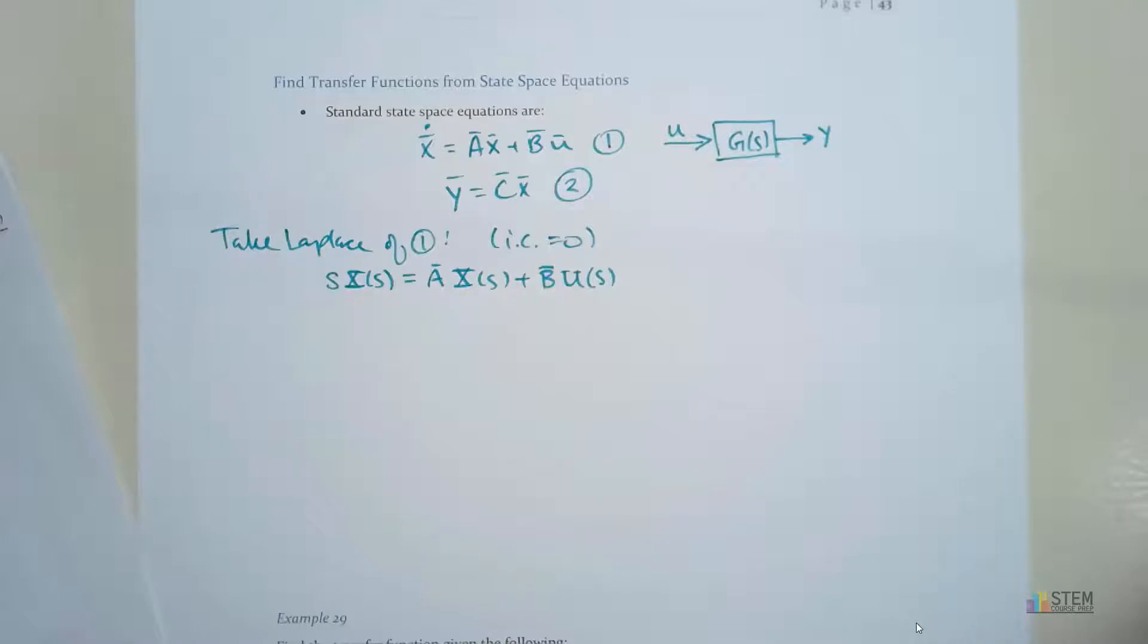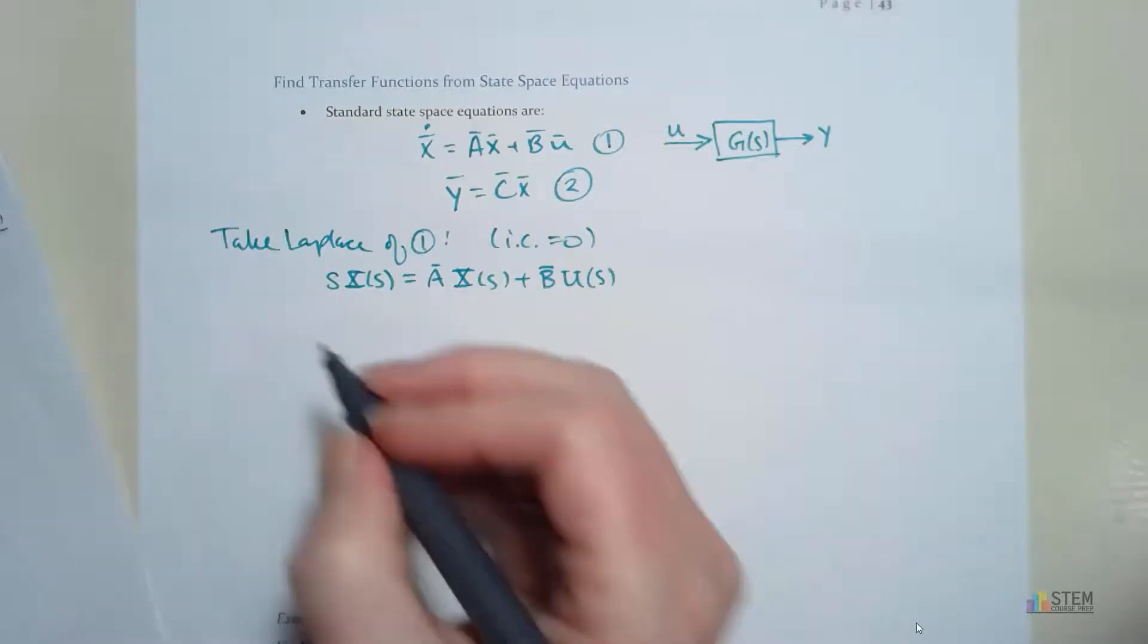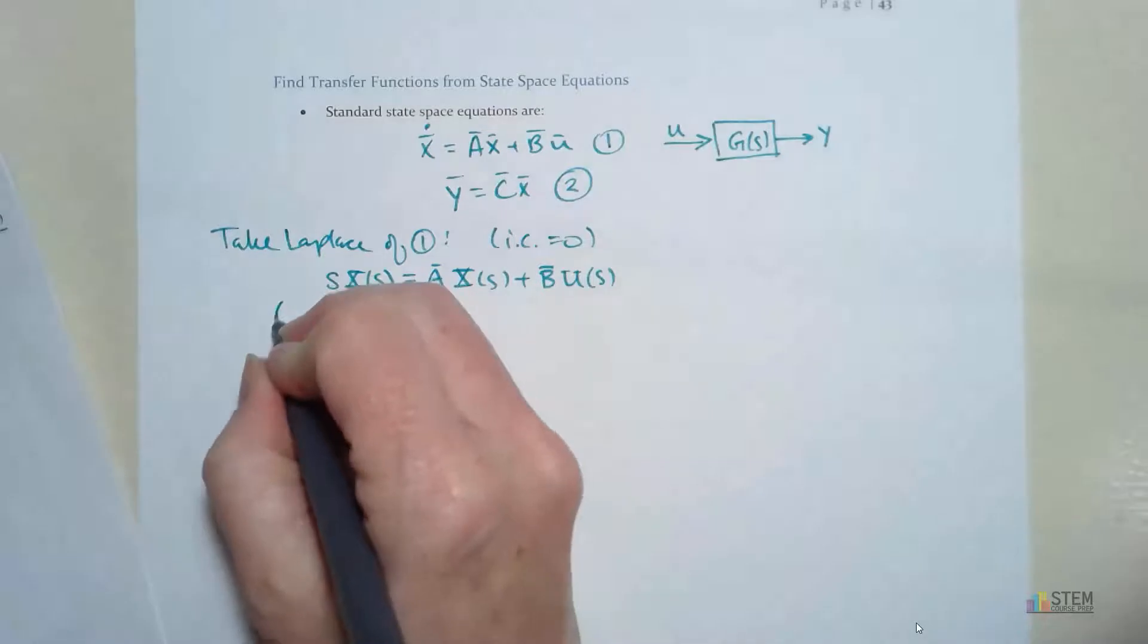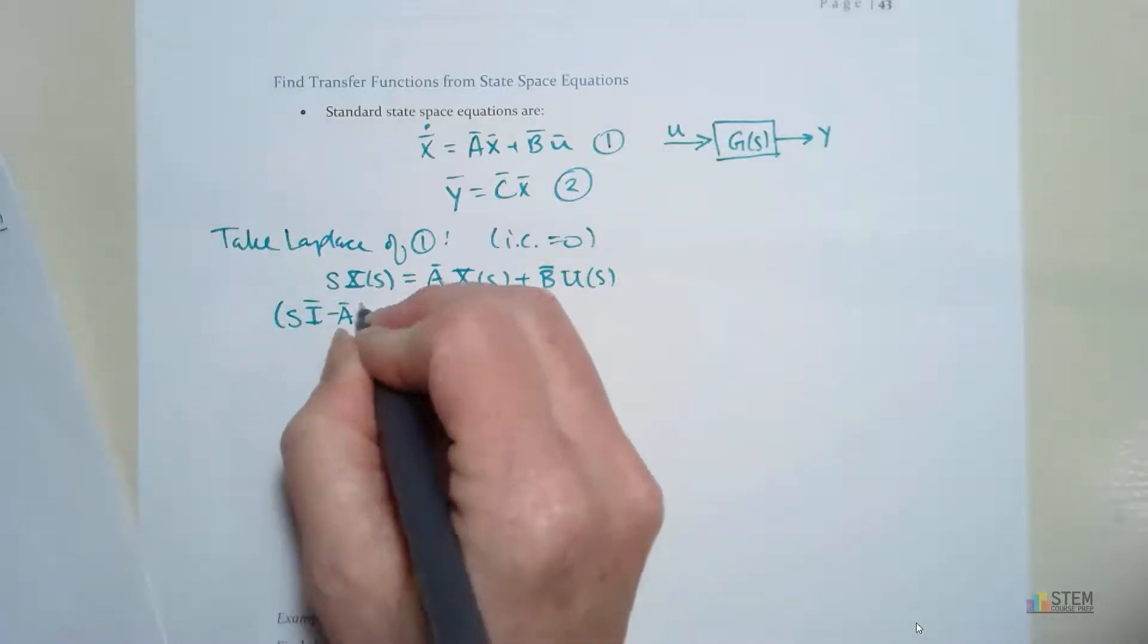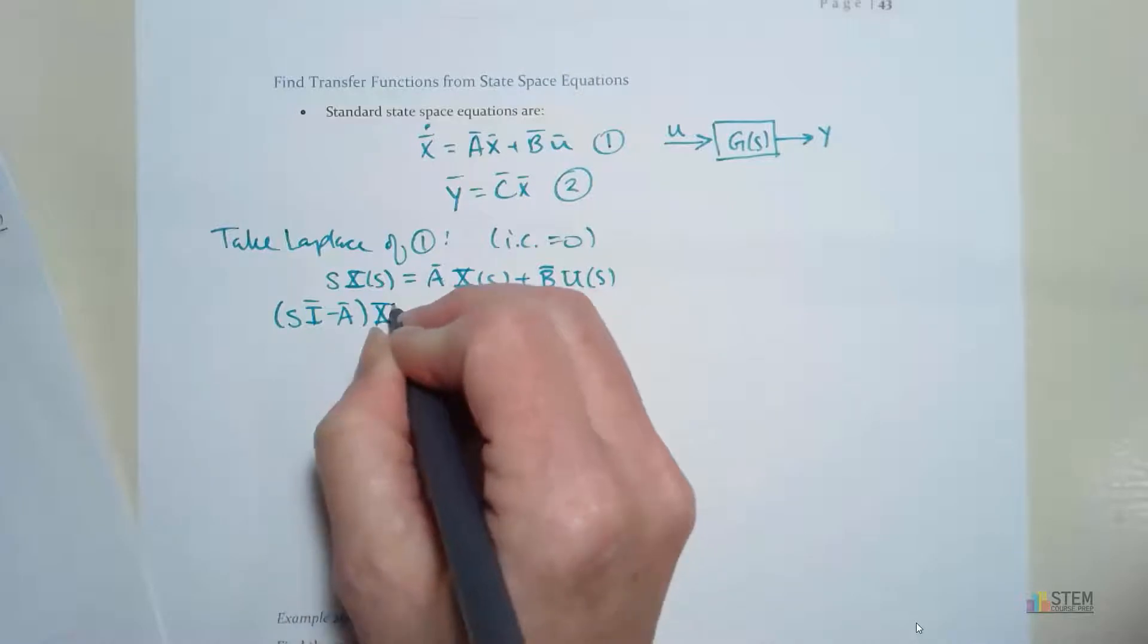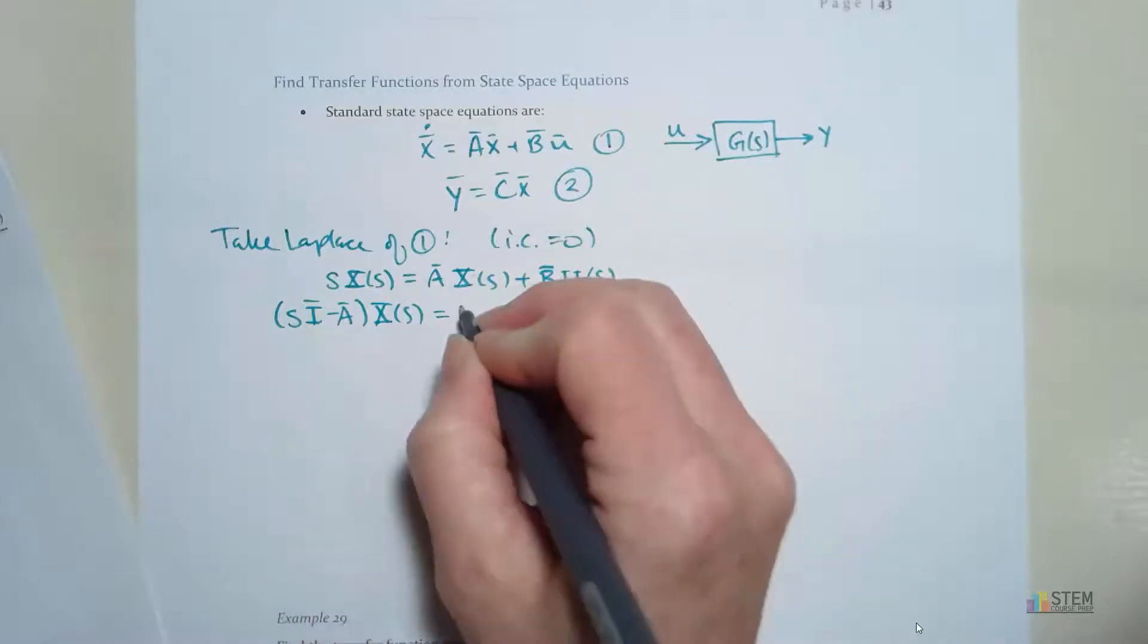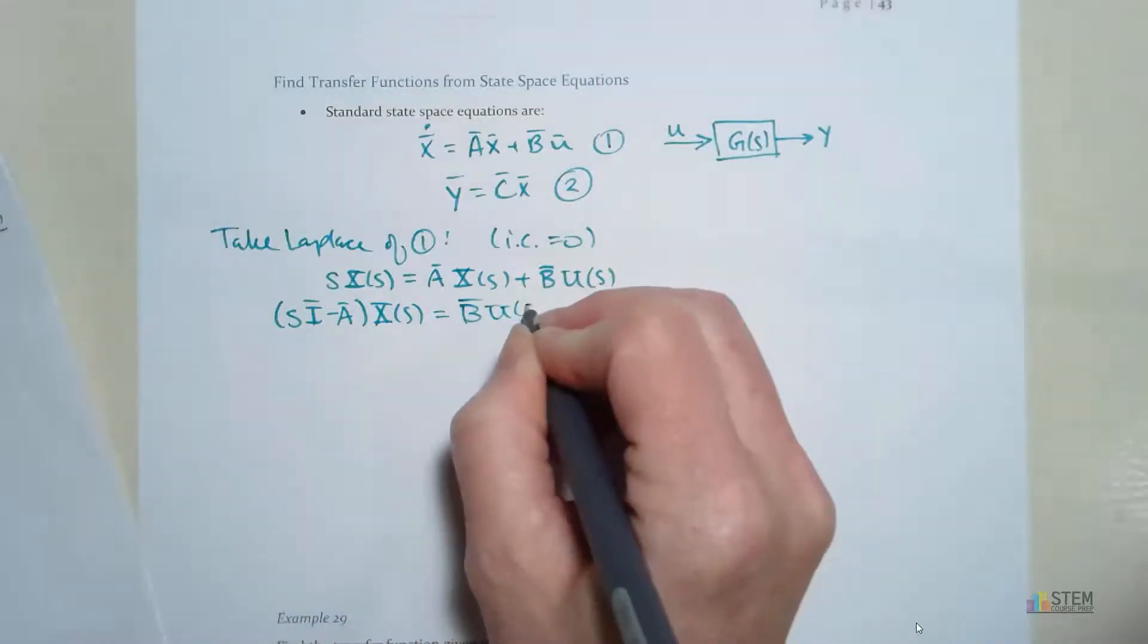Now we've got that equation. Now notice we've got an X term here, we have one here. I want to group those together. Let's move this one over to the left. And if we move that over to the left, we can write S times I minus A times X of S equals B times U of S.